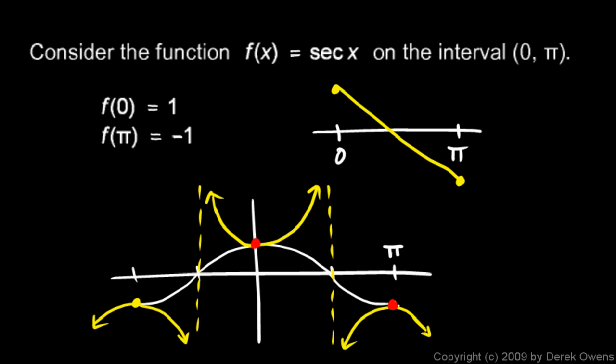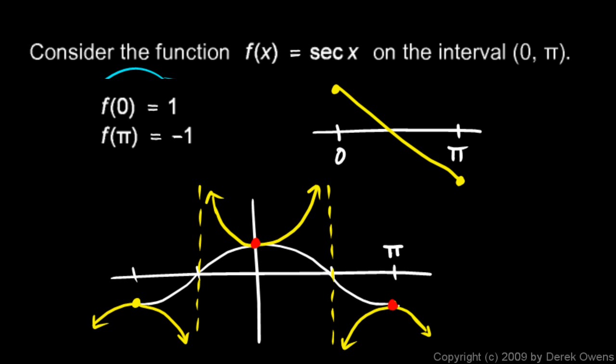So the point here is don't get tricked. You might see a problem set up like this in a discussion of the intermediate value theorem and think, oh yeah, it goes from 1 to negative 1, so on the interval from 0 to pi it has to go through 0. Well, it only has to if it's continuous, and the secant function, if you remember the shape of the graph, is not continuous.